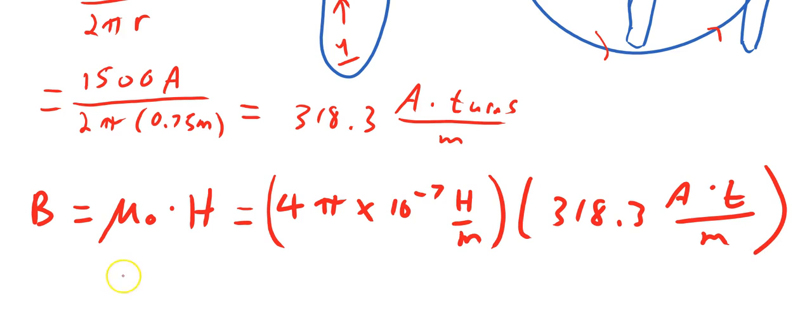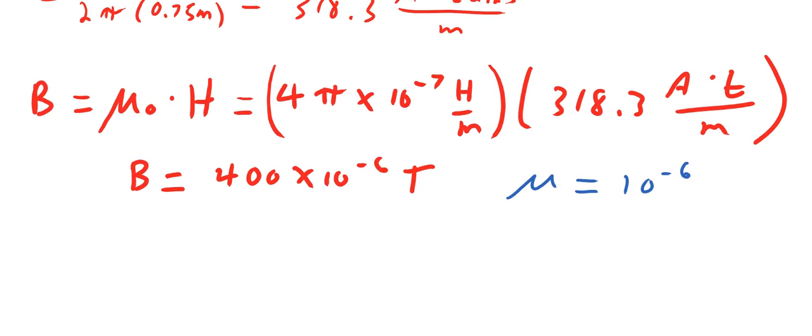And we are going to multiply that by the 318.3 amp turns per meter that we just calculated as the magnetizing force. So this gives us flux density of 400 times 10 to the negative 6. And now the unit is teslas. Remember that if micro is 10 to the negative 6 then we could equally say 400 micro teslas is the flux density.